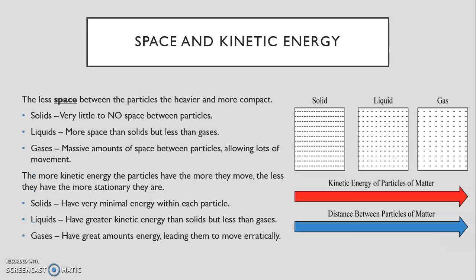Next, space and kinetic energy. The less space between the particles, the heavier and more compact the object is. So solids - there is very little to no space between particles. You can see that on the right. In the solids lines, the space between the hyphens or just the dashes are very minimal. You can tell that they're there, but that is what's keeping all of them very close and making it a definite shape. Liquids - more space than solids but less than gases, as you can see on the right. It's pretty evenly spread, it's just the middle, the Goldilocks. And gases - massive amounts of space between particles, allowing lots of movement and also allowing low density and low weight.